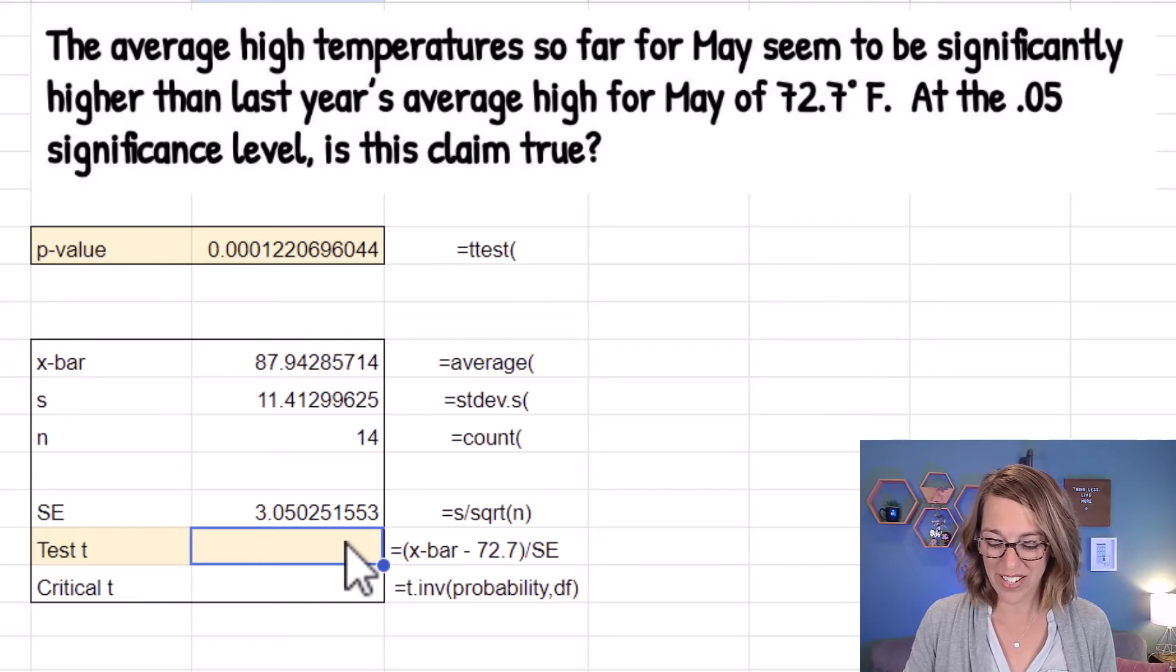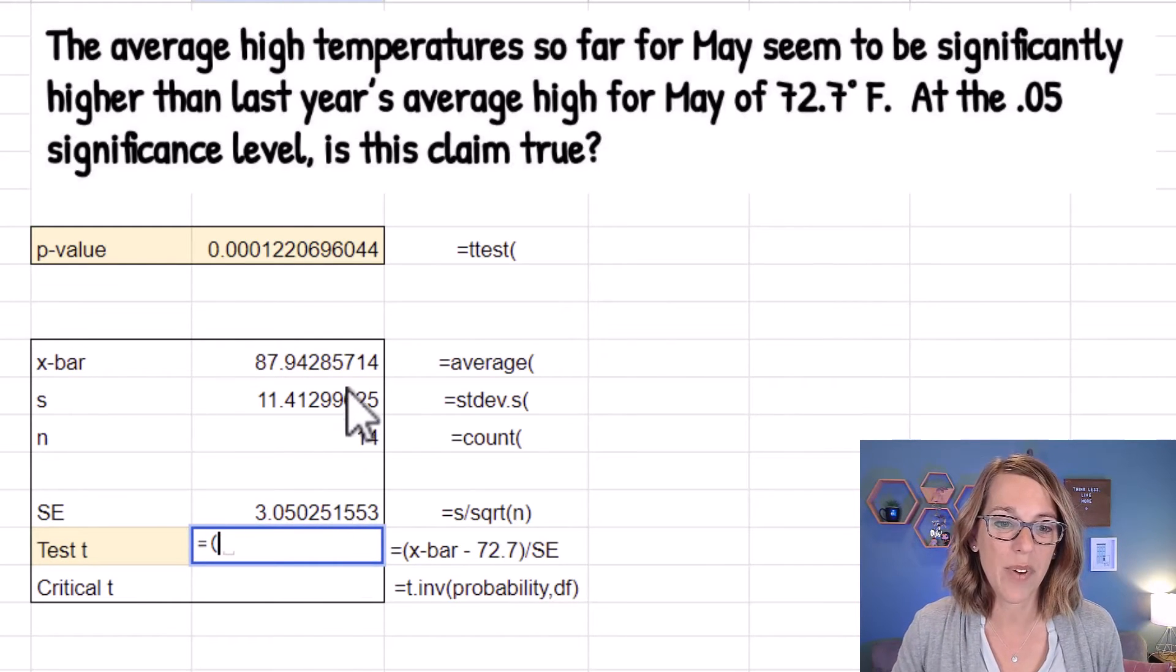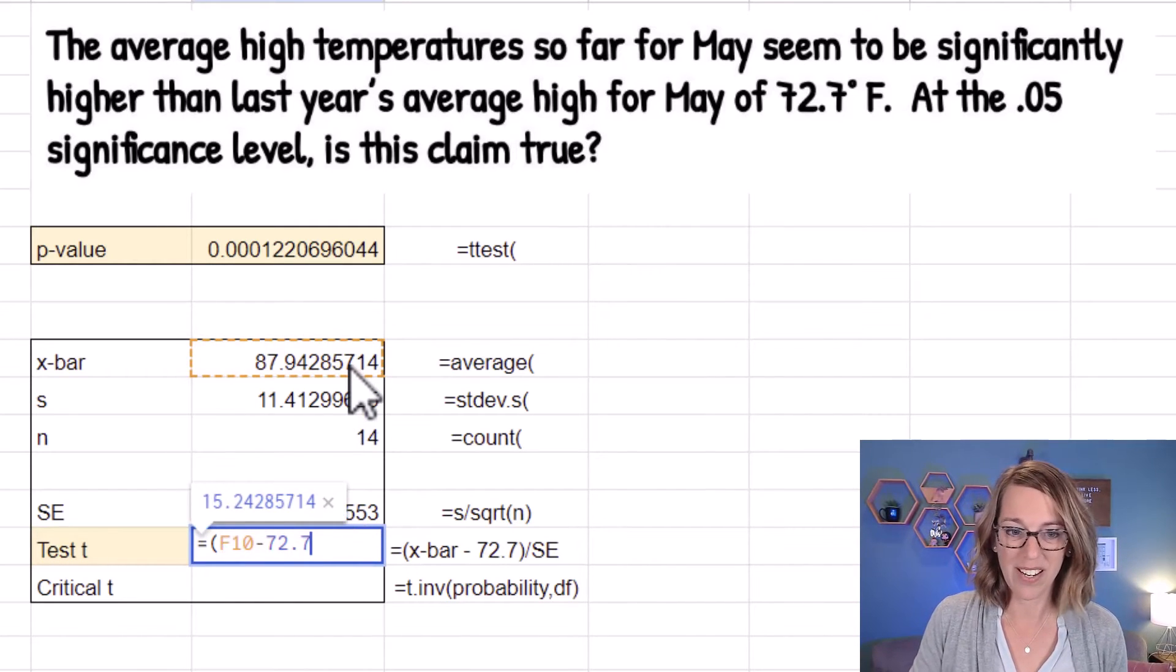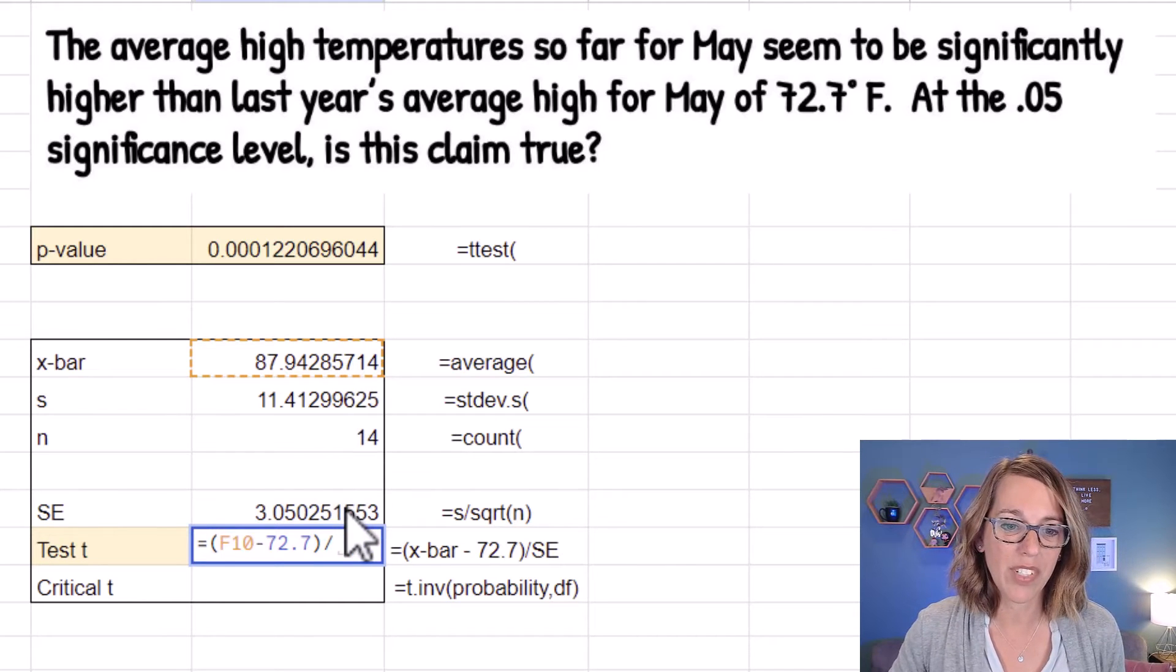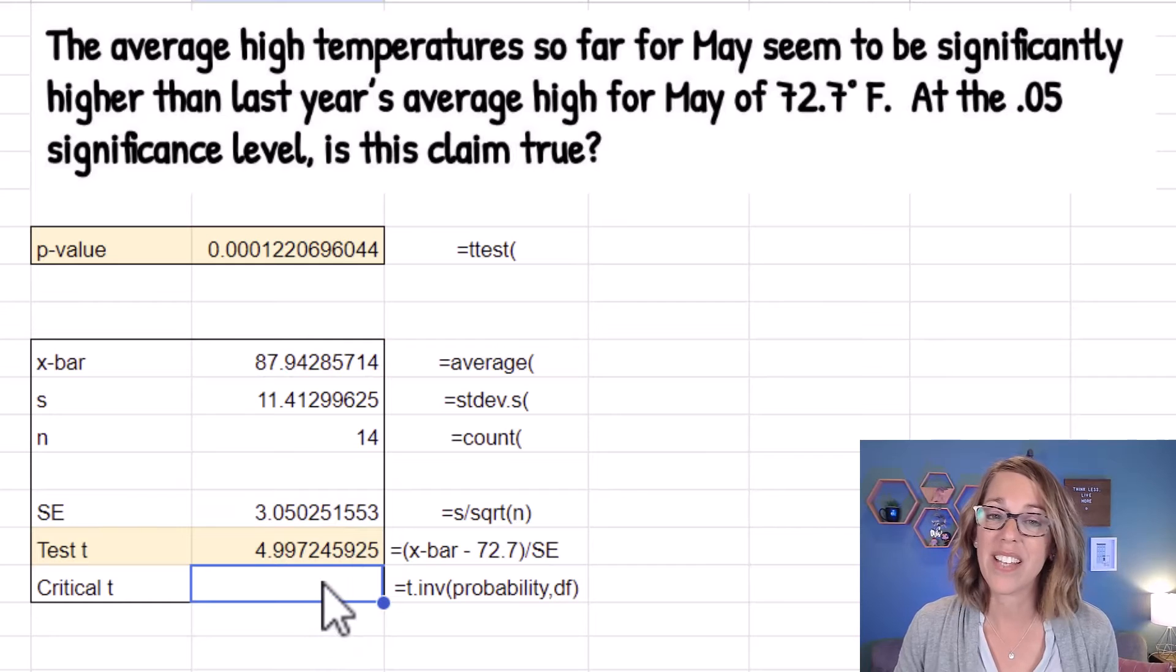Now I'm ready to compute that test t. So I'm going to go equals parentheses. I want my sample mean minus my hypothesized mean of 72.7 divided by my standard error. I'm just going to click on that and then hit enter. And I've got my test t.